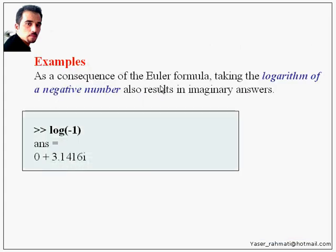As a consequence of the Euler formula, taking the logarithm of a negative number also results in imaginary answers. If you type this code, log minus 1, you can get this answer.